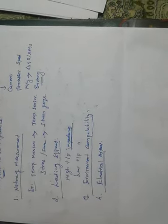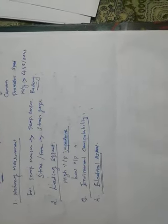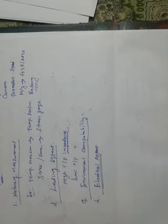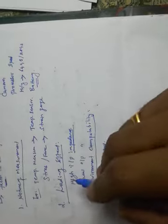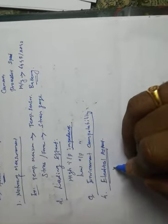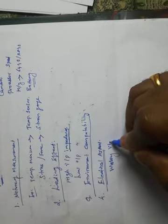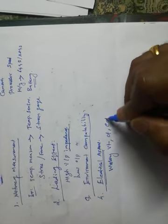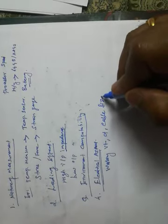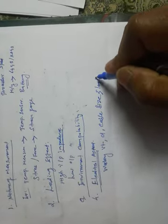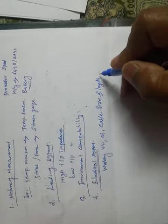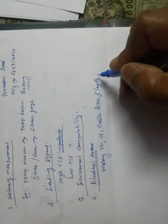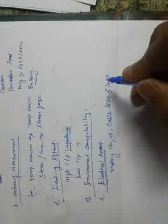These are all the factors under the category of electrical aspect. You have to select the transducer based on working voltage, working current, cable size, cable length, and how much distance you have to cover for the transducer. These are all the factors to be considered for the electrical aspect of selecting a transducer.